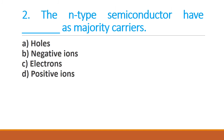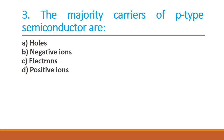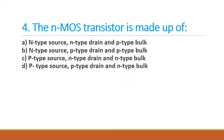Next question: N-type semiconductor has electrons as the majority carriers — option C is the right answer. Third question: the majority carriers of P-type semiconductor are holes — option A is the right answer. Fourth question: the N-MOS transistor is made up of P-type substrate with two N-plus regions diffused, giving N-type source, N-type drain, and P-type bulk — option A is the right answer.